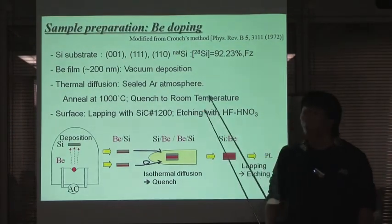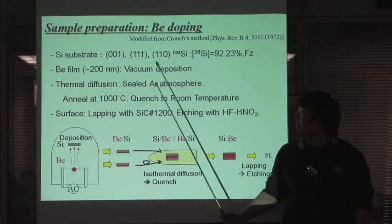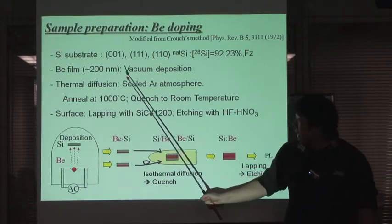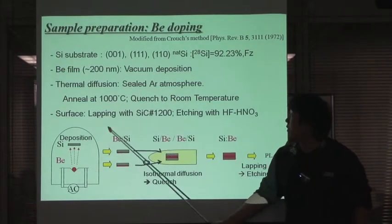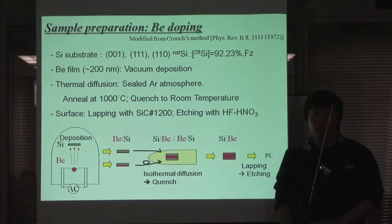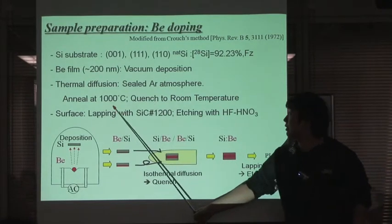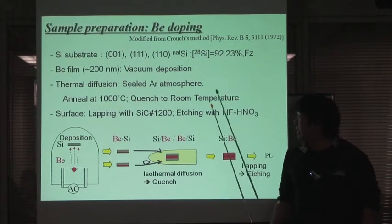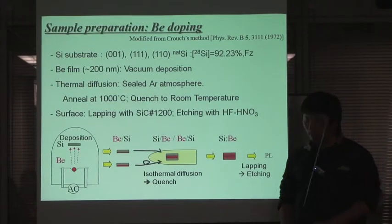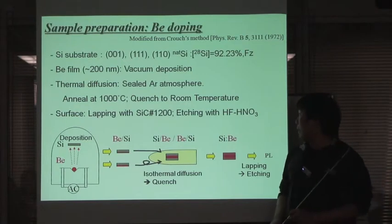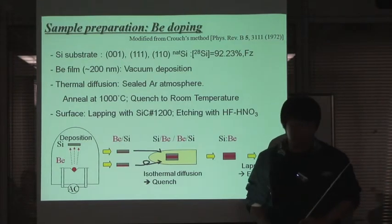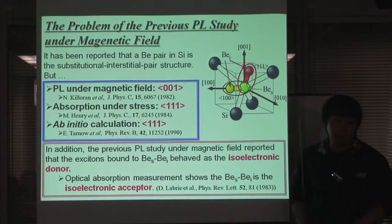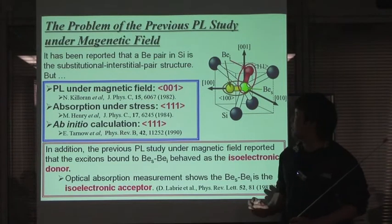This slide shows the sample preparation of barium-doped samples. We used non-isotopically controlled FZ silicon substrates. After vacuum deposition making a barium film on these substrates, they were annealed at 1,000 degrees centigrade in argon atmosphere, as shown in this figure. After annealing, they were quenched to room temperature. The surface was lapped with silicon carbide and etched with hydrofluoric-nitric acid.